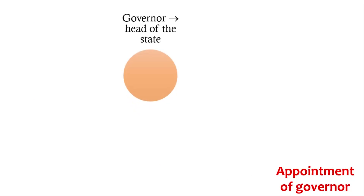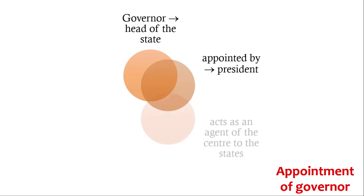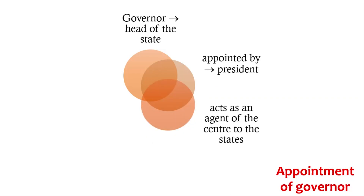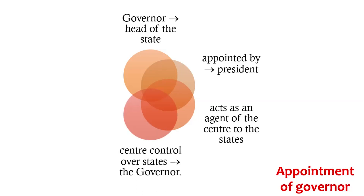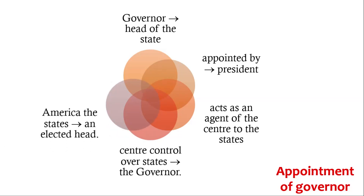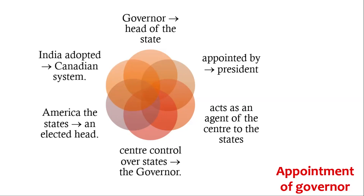Appointment of Governor: The Governor is the head of the state and is appointed by the President. The Governor holds office as and when the President wishes, and also acts as an agent of the Centre to the states. The Centre exercises control over the states through the Governor. The American Constitution is in opposition to our Constitution in this matter — in America, the states have an elected head. In this aspect, India adopted the Canadian system.